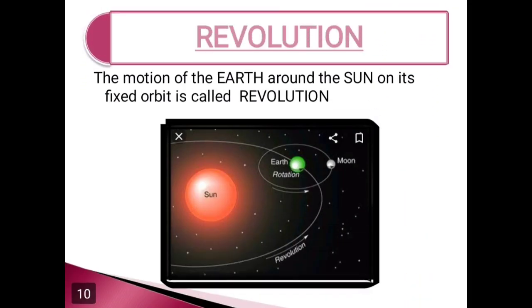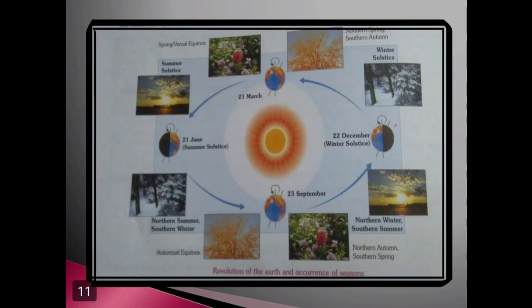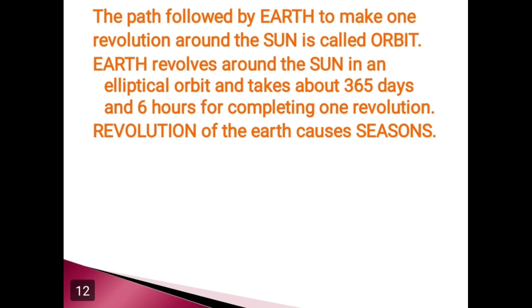Now we are going to learn about the second movement of the earth, that is revolution. The earth moves around the sun on its own path called orbit. This motion of the earth is called revolution. Revolution of the earth causes change in seasons. The path followed by the earth to make one revolution around the sun is called orbit. The earth revolves around the sun in an elliptical orbit and takes about 365 days and 6 hours to complete one revolution. It is because of revolution that we experience different seasons.